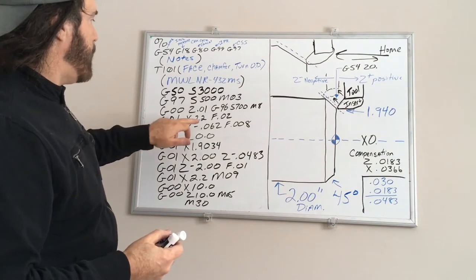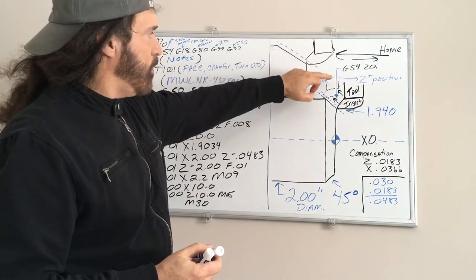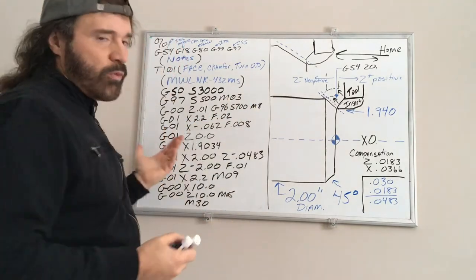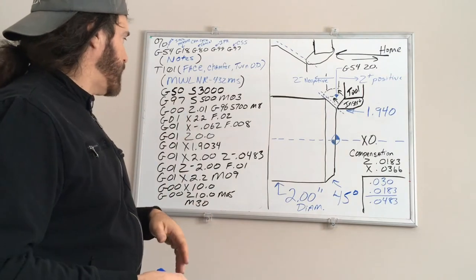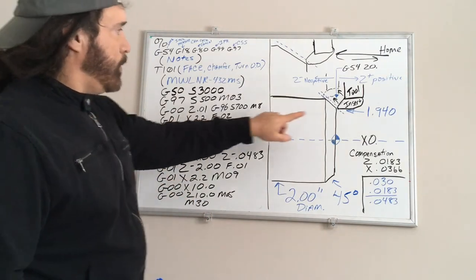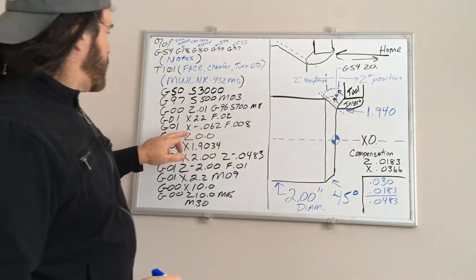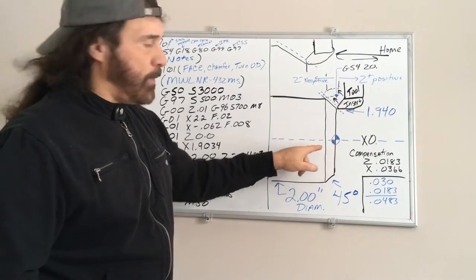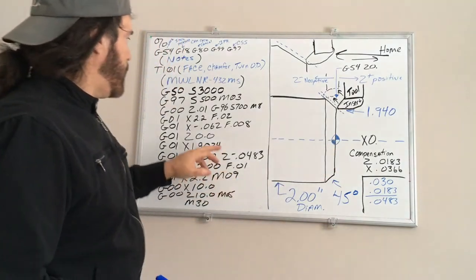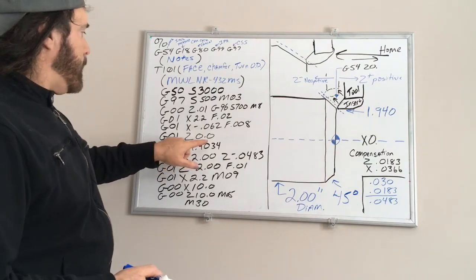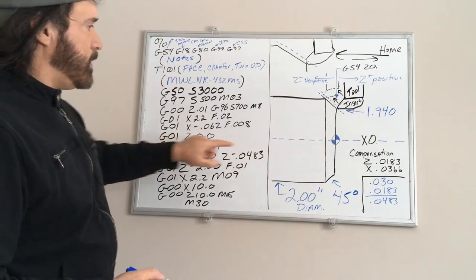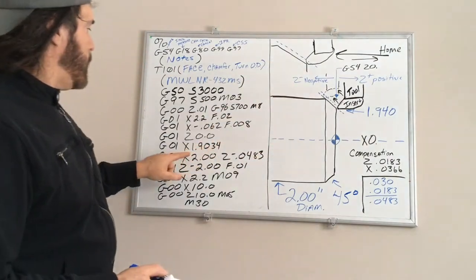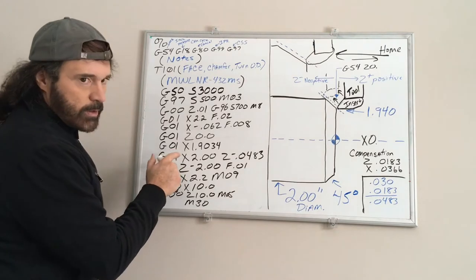Now I'm gonna feed down to X2.2 just to get above the part, I'm doing 20 thousandths per revolution just to get there. You could rapid that too. Now I'm gonna do a feed move, go down to X negative 0.062 because we have to go past centerline, and that was described in the previous video. Feed rate of 8 thousandths. Now I'm gonna feed in to Z0, it's only going to do a 10 thousandths cut coming up.